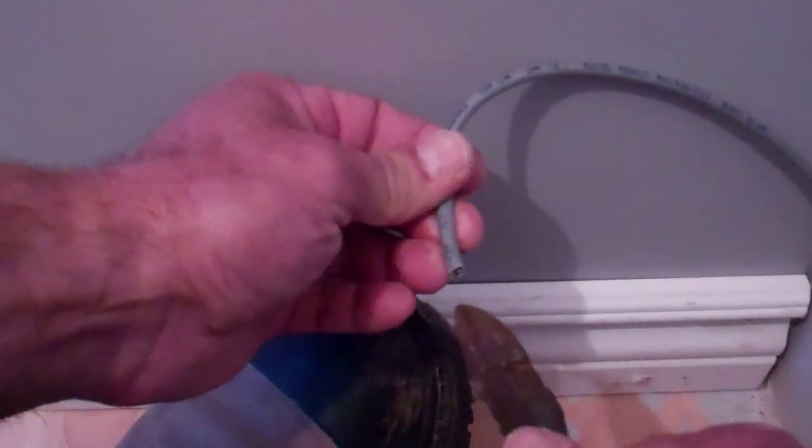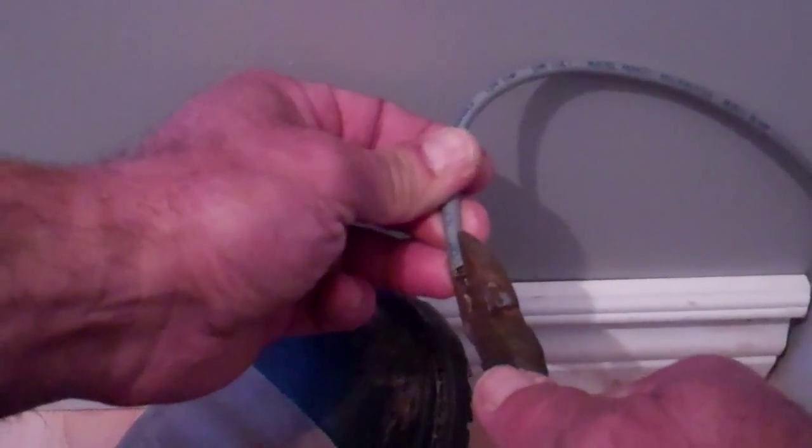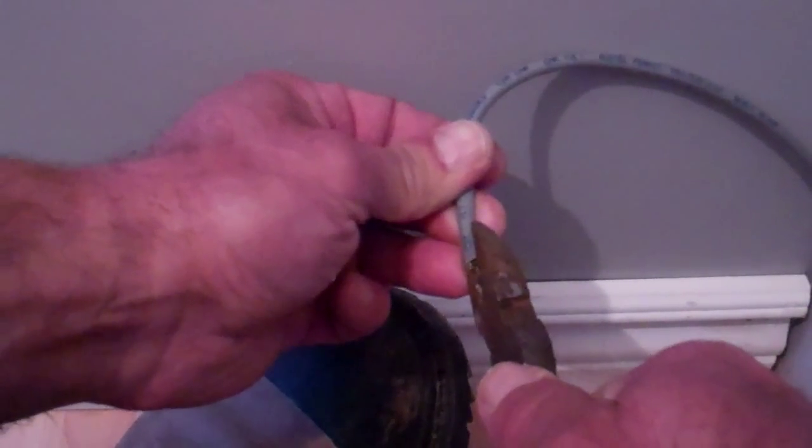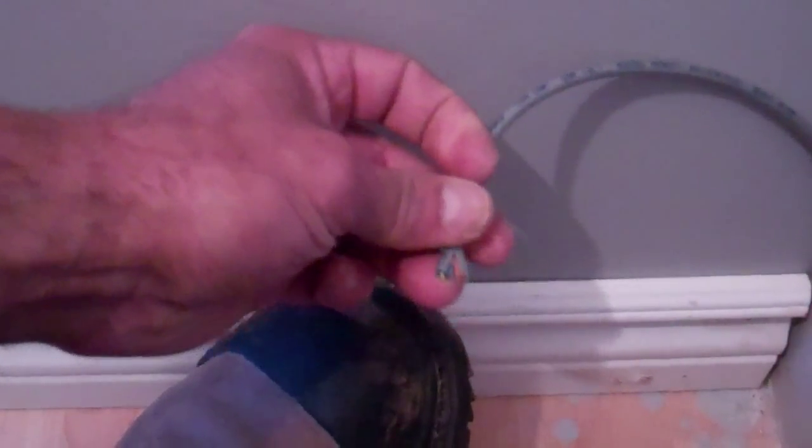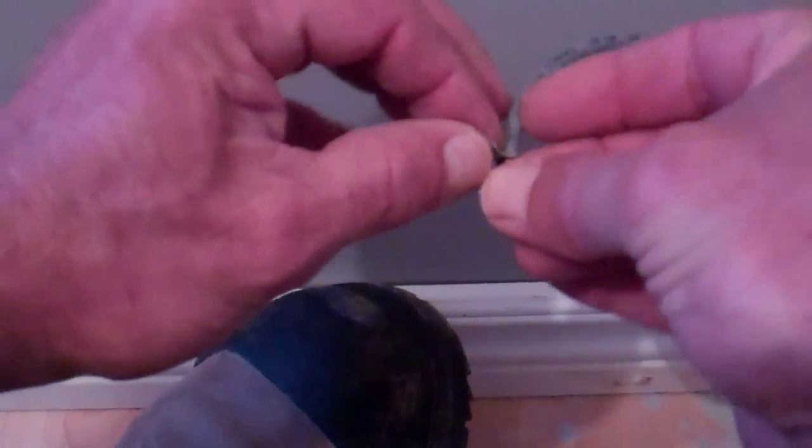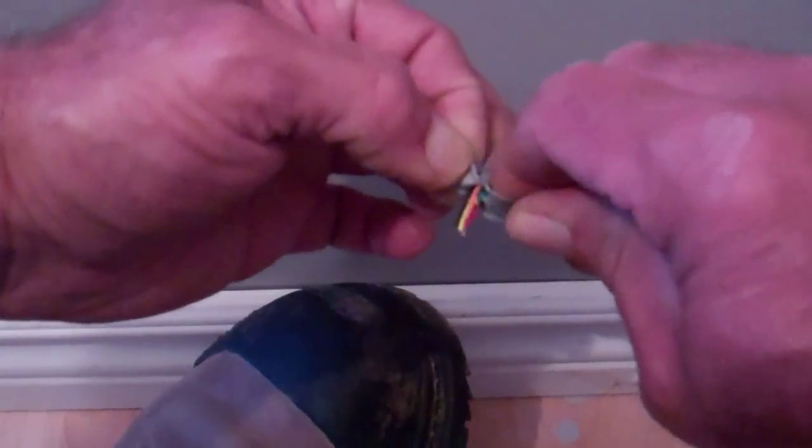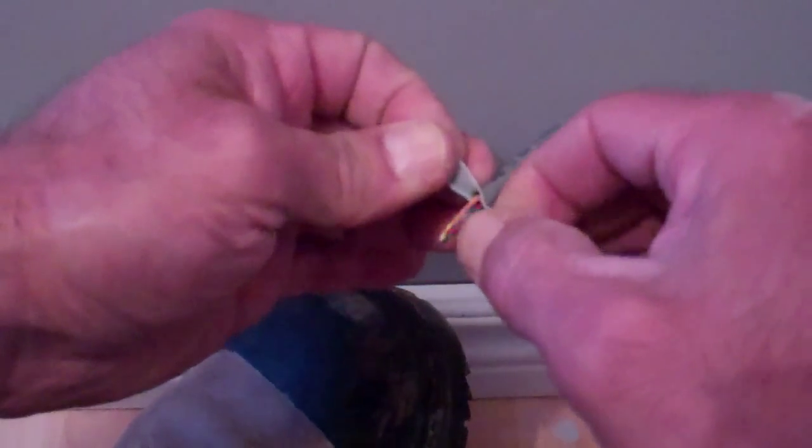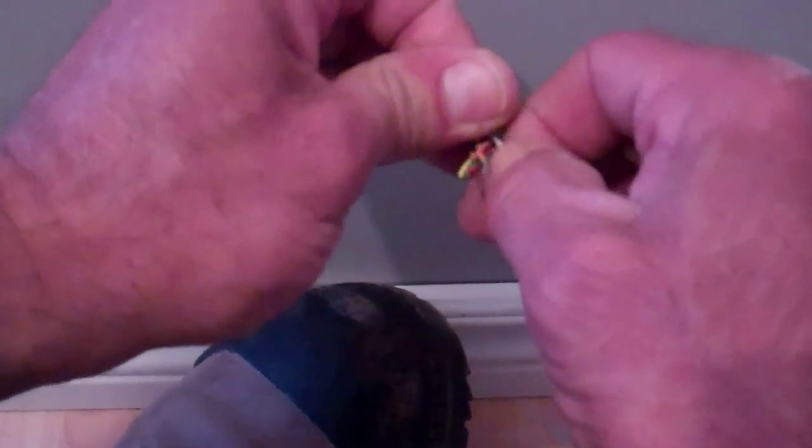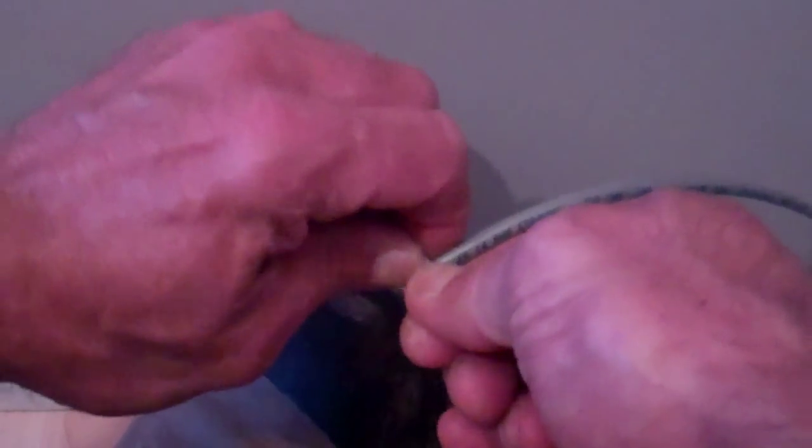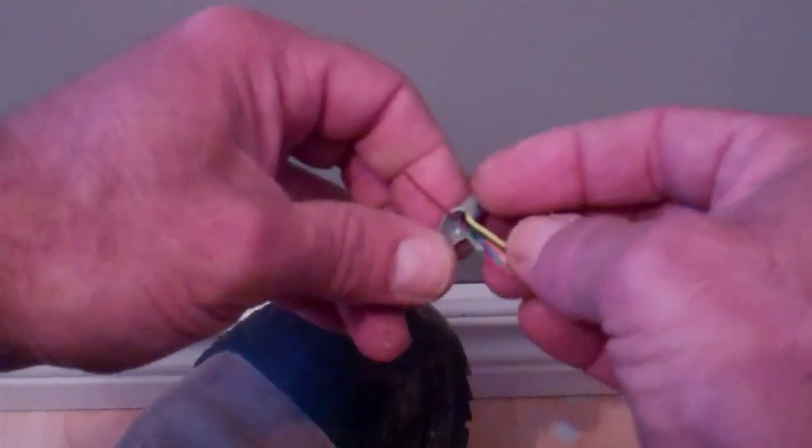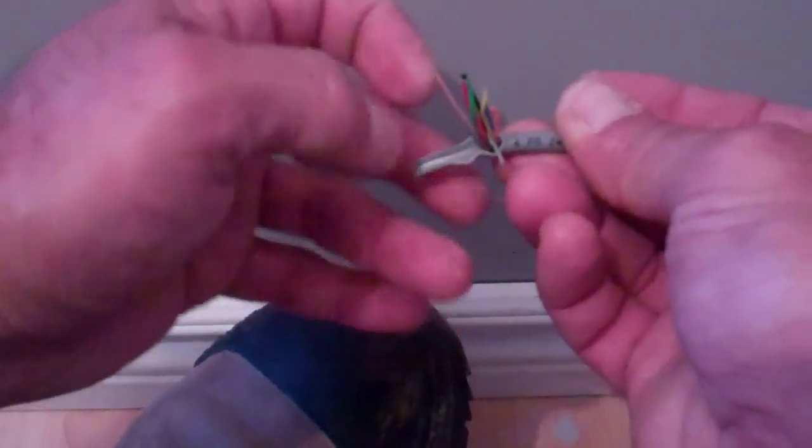Once you cut that, we're going to terminate these in that housing. So we've got to cut that Cat 5 cable back and expose all the pairs in it. We want to get it good and far back because this isn't an exact science. We're just basically looking for a place to get beyond any damaged wires where we cut this.